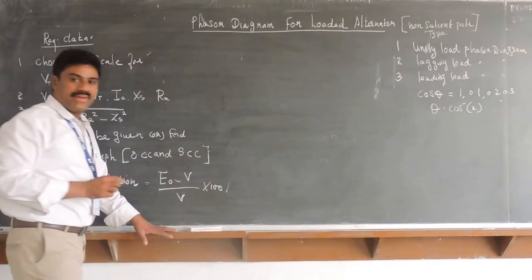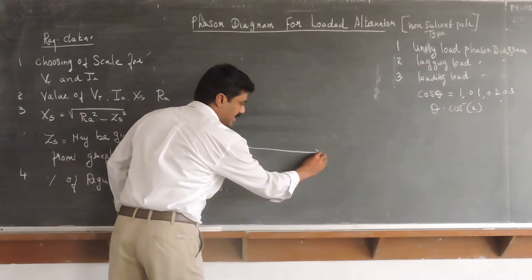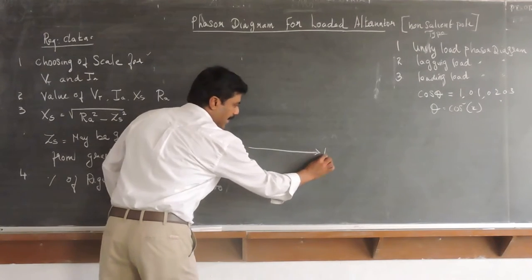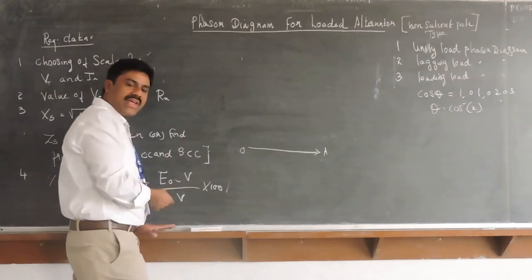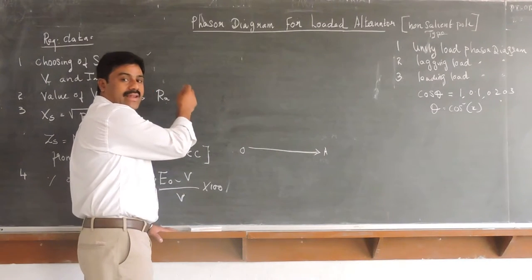First, we will take the voltage vector as a reference. Therefore, the voltage vector is given as OA. The length of this OA vector is designated by V.